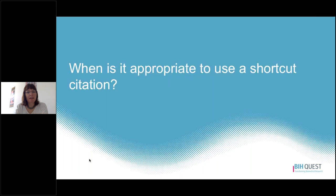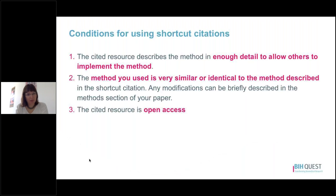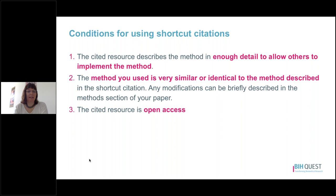When is it appropriate to use a shortcut citation? We argue there are three criteria every shortcut citation should meet. First, the cited resource must describe the method in enough detail to allow someone else to implement it. Second, the method you use must be very similar or identical to the method in the shortcut citation, and any modifications must be briefly describable in your paper. Third, the cited resource must be open access. The inability to access a shortcut citation is a significant barrier to reproducing methods, and open access helps remove that barrier.